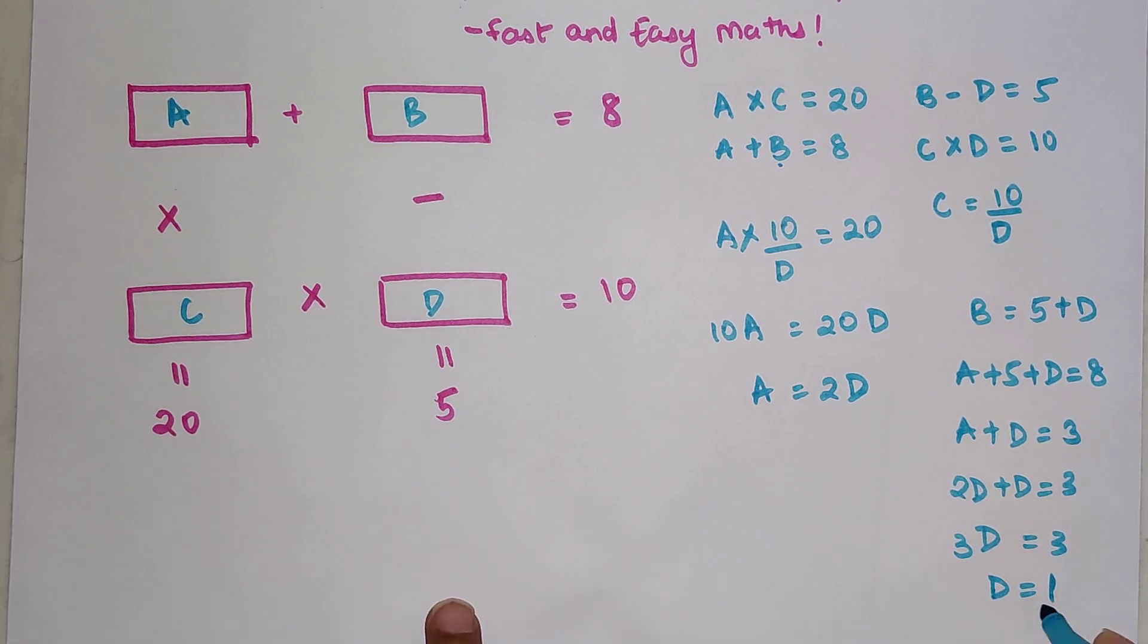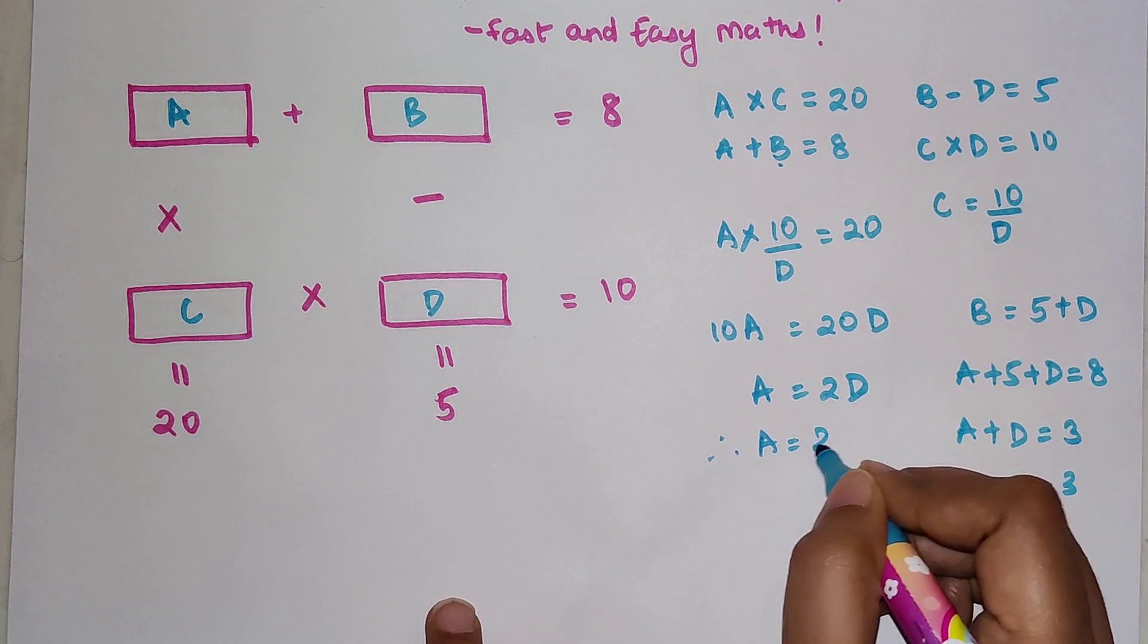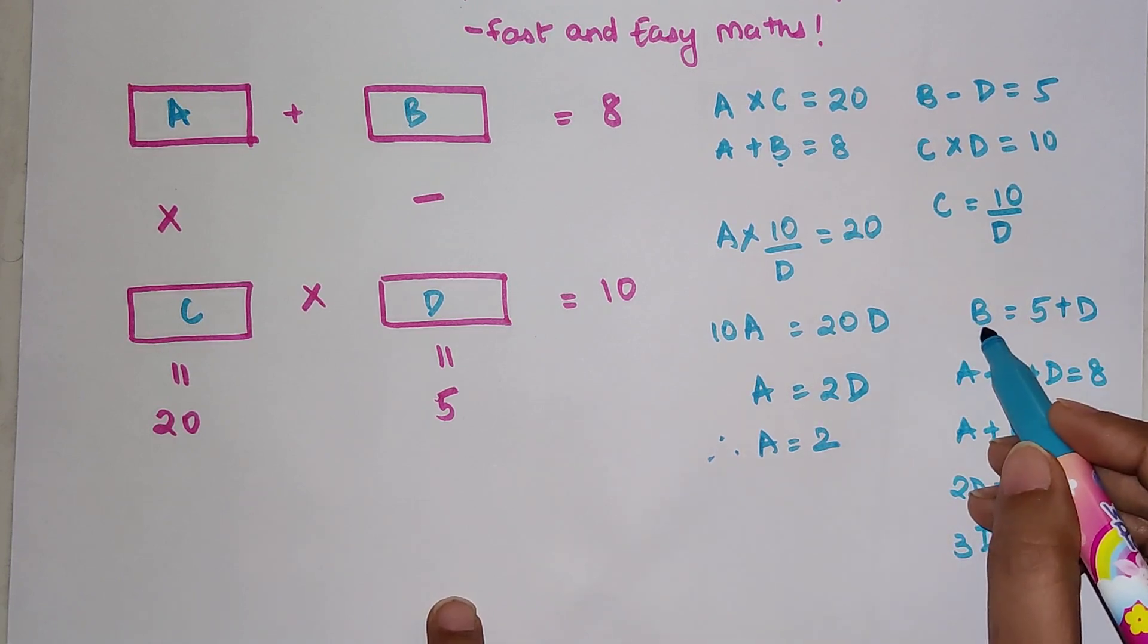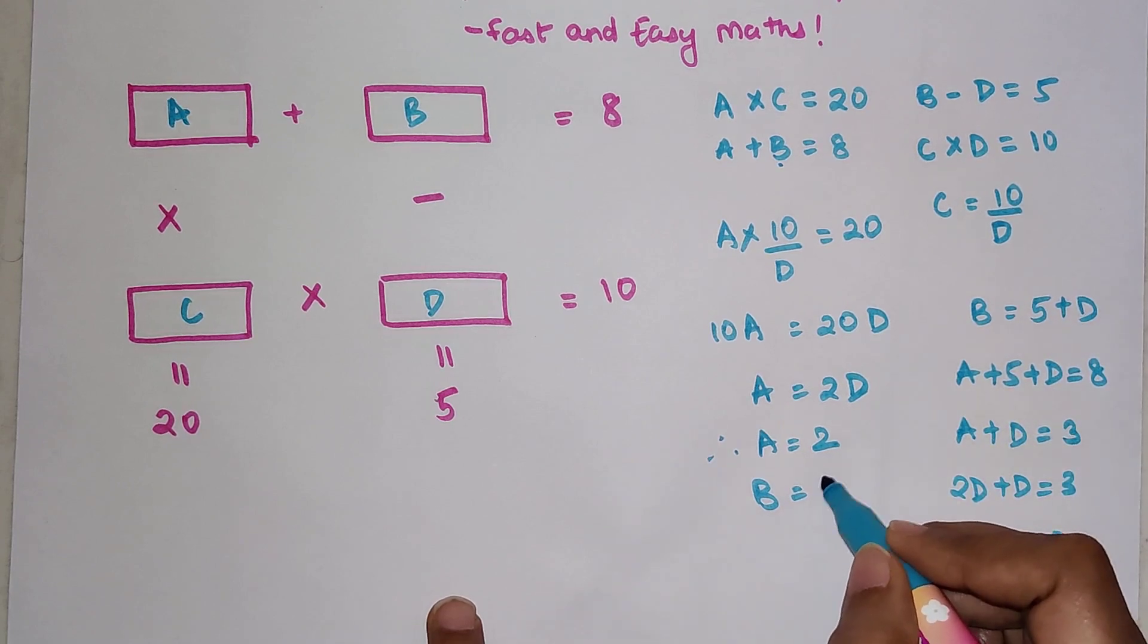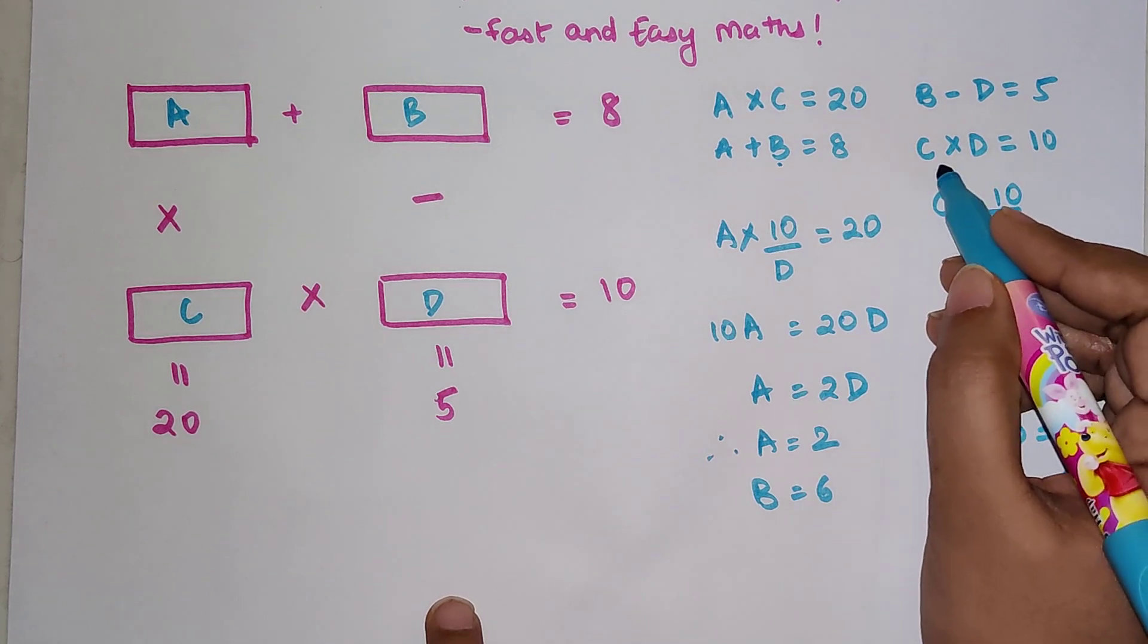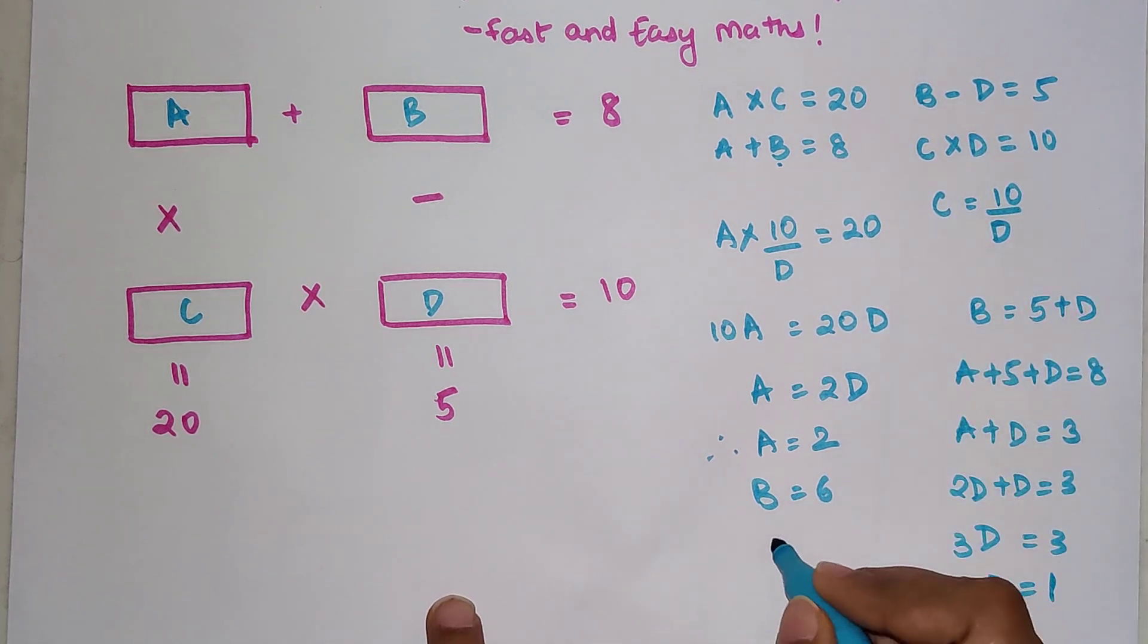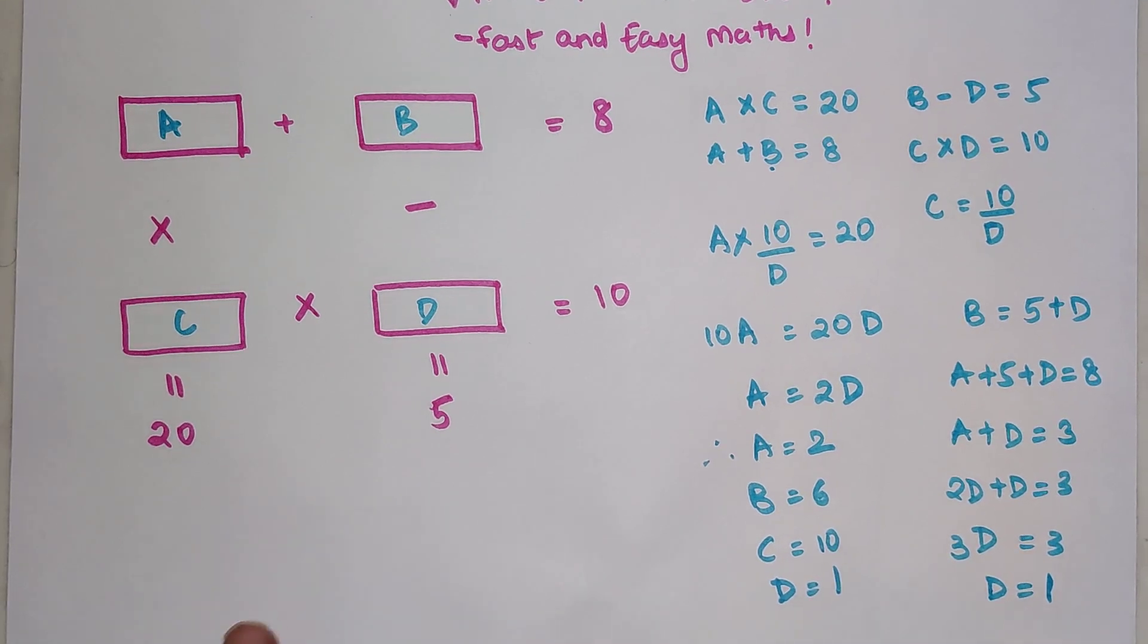So therefore I can say A is 2. And from here I can say B value will be 5 plus 1, which is 6. And C value will be what? C times 1 equals 10, so C equals 10 and D equals 1.